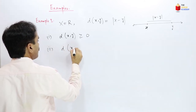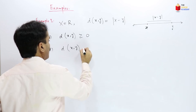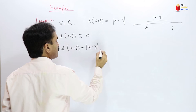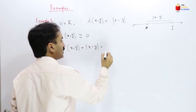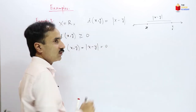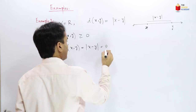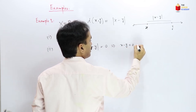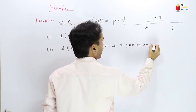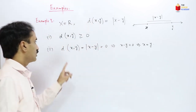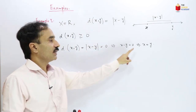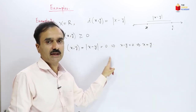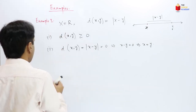d(x,y) = |x − y|. If this is equal to 0, then this implies x − y = 0, which implies x = y. So d(x,y) = 0 if and only if x = y. The second condition is also satisfied.